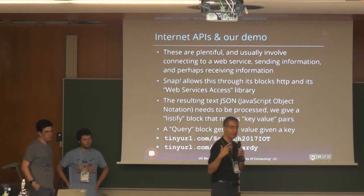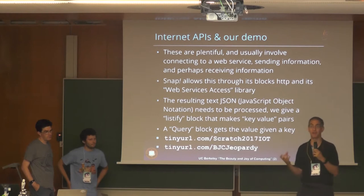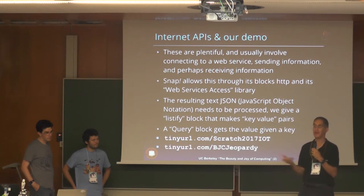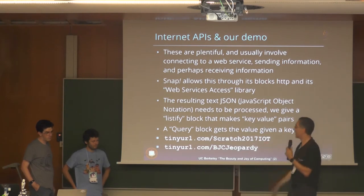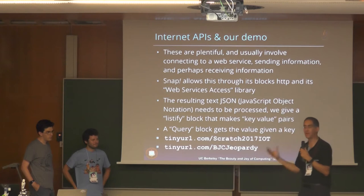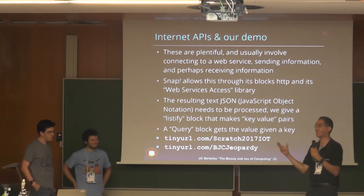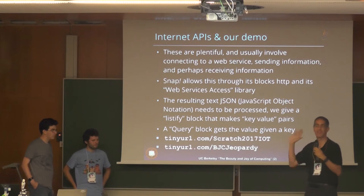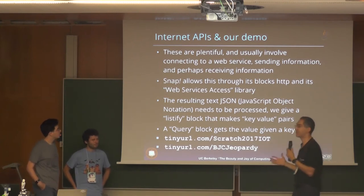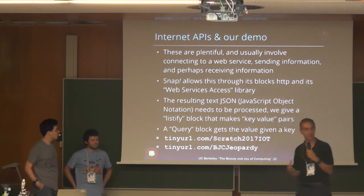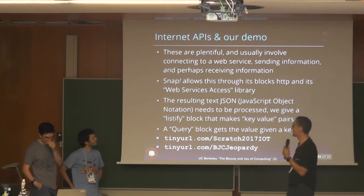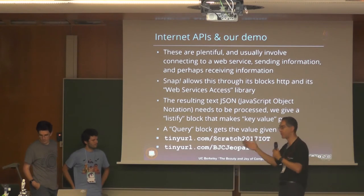What you typically get back from these internet APIs is XML, which you don't really want to parse manually — it's not human readable — or JSON, JavaScript Object Notation. You have to chug through that. But thanks to Bernat and our team, we actually have a block that lets you take that ugly text and make it just a list of lists of lists, and we know how to deal with that. Then we use some of our functions-as-data routines, like keep and map, to process that. And once you're done, you can use a query block.